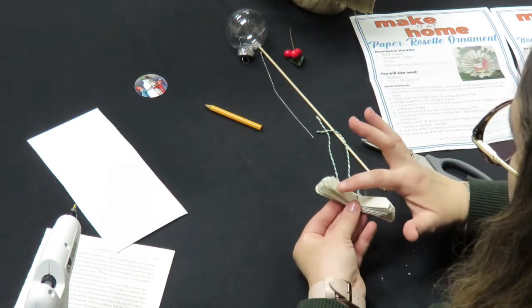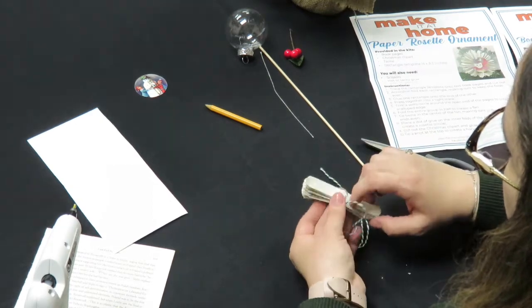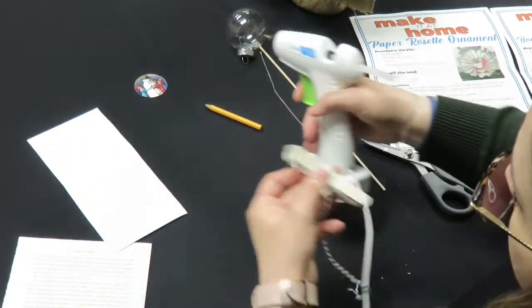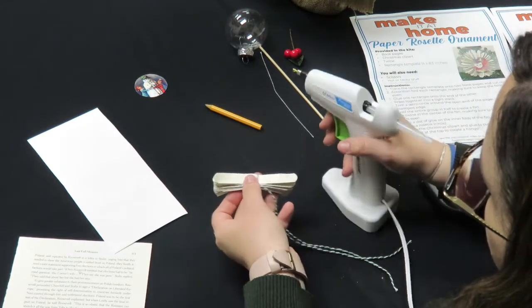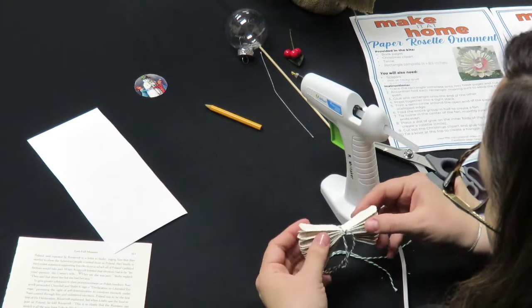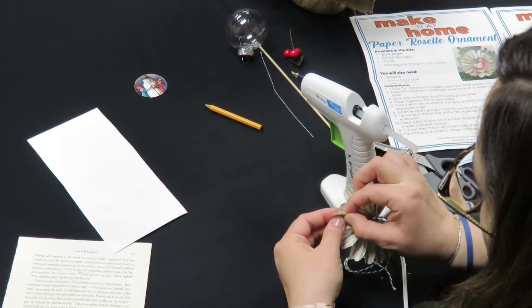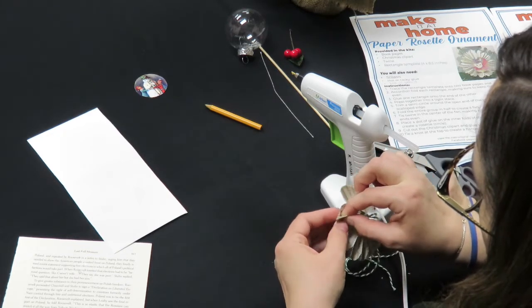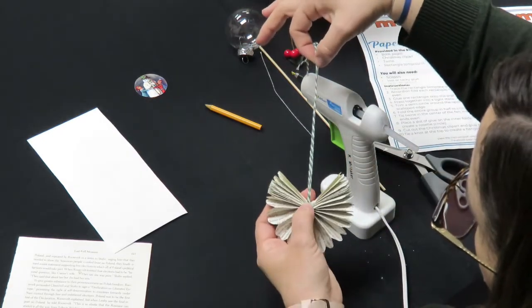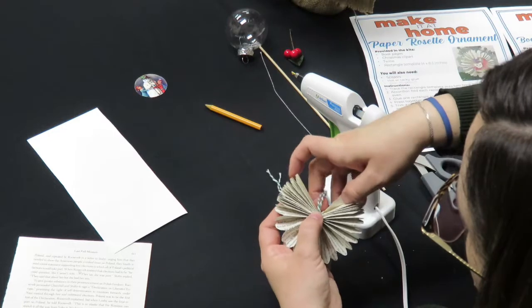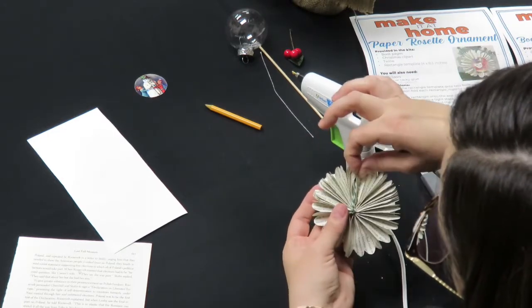Next, you're going to place a dot of glue around each of the open sides so that we can open it up into a rosette. For the other side, make sure that your string comes up in between to glue it in place. This will help to stabilize the hanger. It's going to look like this when you're done.